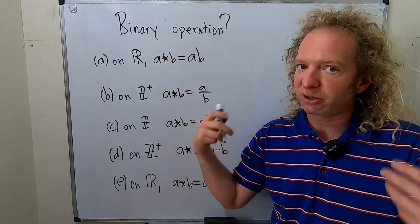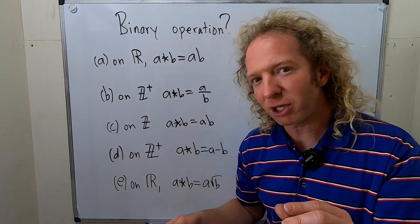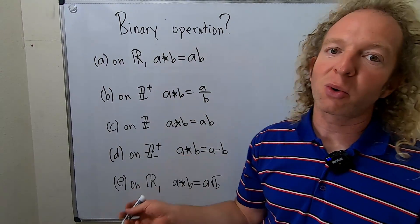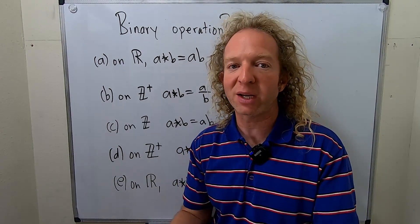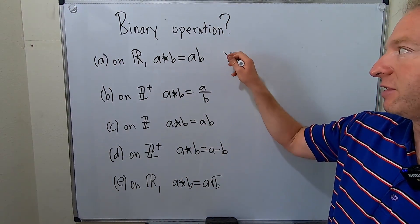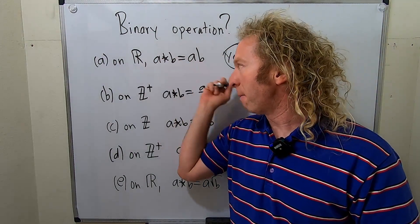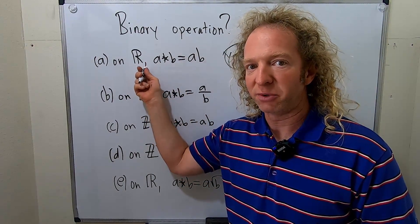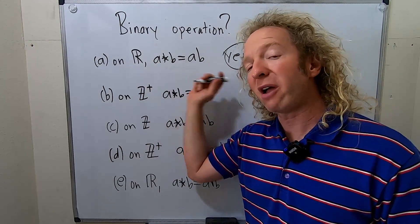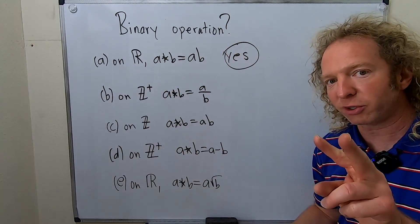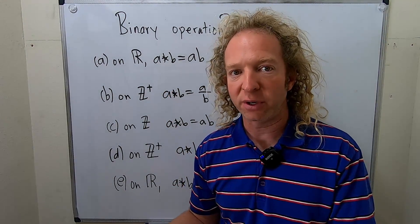In this case, the answer is clearly yes. If you take any two real numbers and you multiply them, you are going to get a real number. We can take that for granted as just an obvious fact. So this is a binary operation on the set of real numbers. Again, this has to be true for every real number. If you find two real numbers where it fails, no good.